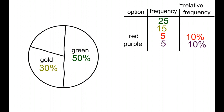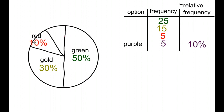Finally our last two — it's going to be the red and purple, each with 10%, so we'll break this remaining section in half. Sometimes your labels will not fit inside the circle, so when that happens you can let them hang out outside just a little bit, something like what I'm doing here.